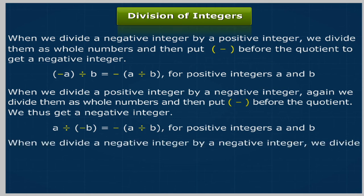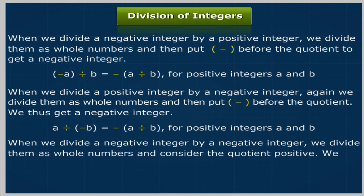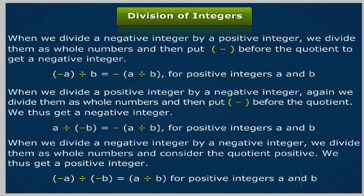When we divide a negative integer by a negative integer, we divide them as whole numbers and consider the quotient positive. We thus get a positive integer: (-A) ÷ (-B) = A ÷ B for positive integers A and B.